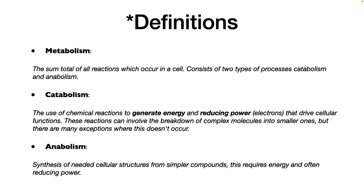Anabolism is the synthesis of needed cellular structures from similar compounds. This requires energy and often reducing power. We're going to spend a lot of our time talking about catabolism because this is where microorganisms really differentiate themselves from eukaryotic organisms. Anabolism is nearly universal in the biological kingdom — all organisms seem to synthesize things in similar ways — so we won't spend as much time on that.